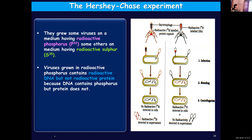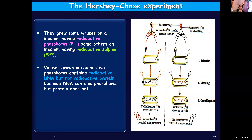Viruses grown in radioactive phosphorus developed radioactive DNA. When they multiply, the genetic material also gets replicated, and for the formation of new DNA, they take required components only from the medium where they are surviving. So they developed radioactive DNA because they were growing in a medium with radioactive phosphorus. This radioactive phosphorus gets incorporated only into the DNA because phosphorus is an important constituent of DNA. So the DNA became radioactive, but protein remained non-radioactive.